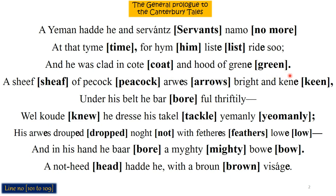The peacock arrows were the arrows which are painted and very strong and sharp. Under his belt he bore them full thriftily — 'thriftily' means carefully. The arrows were carefully placed under the belt.